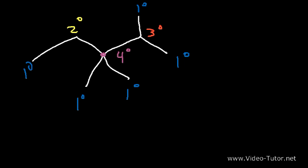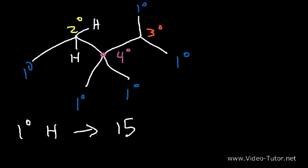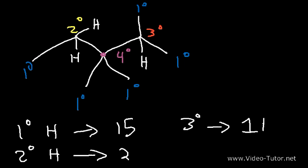Each primary carbon has three primary hydrogens, and there are five primary carbons. So the number of primary hydrogens is three times five, or 15 primary hydrogens. There are two hydrogens attached to a secondary carbon, and there's only one secondary carbon, which means there are only two secondary hydrogens. There's only one tertiary hydrogen attached to a tertiary carbon. Notice that there's no such thing as a quaternary hydrogen. A quaternary carbon already has four bonds, so there's no space for it to attach itself to a hydrogen.